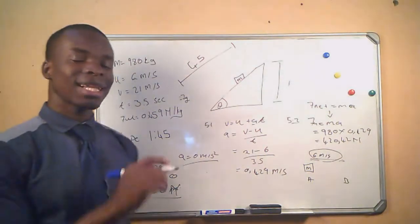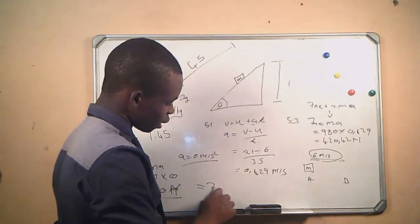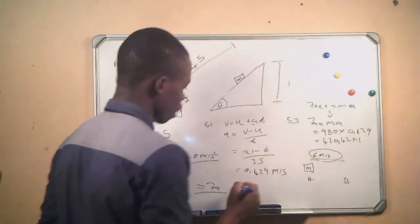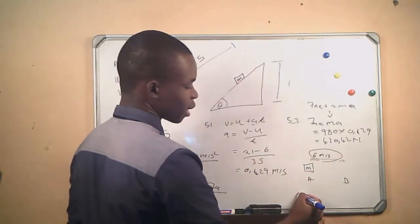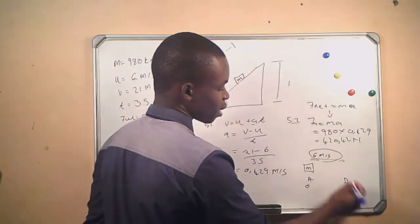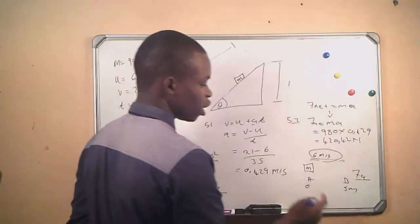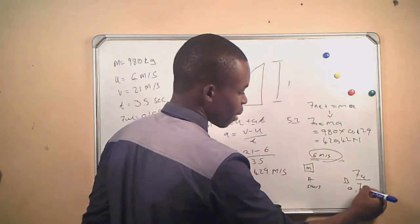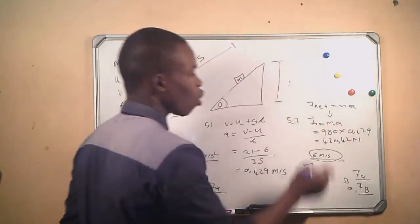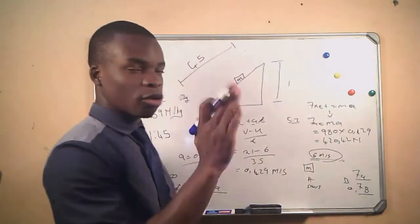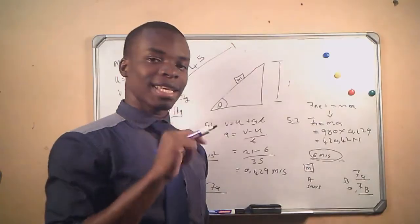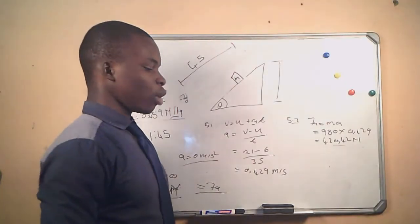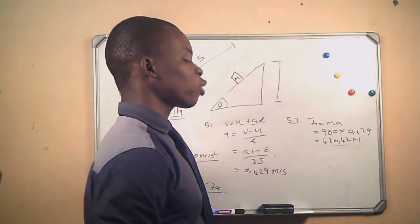This tells us that F_net equals the acceleration force. If our object is accelerating, say from zero to 5 m/s, F_net becomes an acceleration force. If the object is decelerating from 5 m/s to zero, F_net becomes a braking force. So whether they ask for acceleration force or braking force, we use the F_net formula.